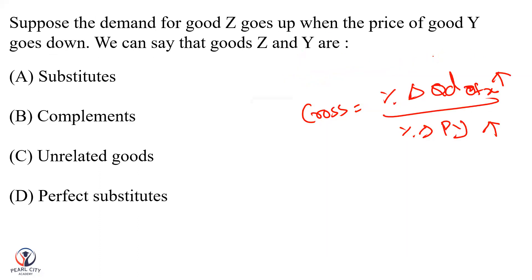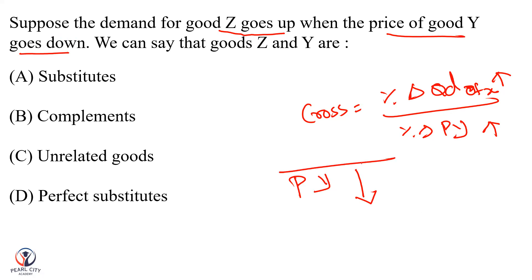For complementary goods the cross-elasticity will be negative. Suppose the price of goods Y goes down, the demand for goods X goes up — meaning the quantity demanded of X increases when the price of Y falls.